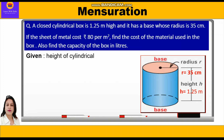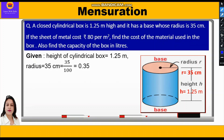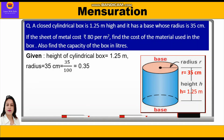Given: the height of the cylindrical box is 1.25 meters, and the radius is 35 centimeters. We need to convert the radius into meters since the rate is given in meters. So we divide 35 by 100 to get 0.35 meters. The rate of the metal sheet is rupees 80 per meter square.